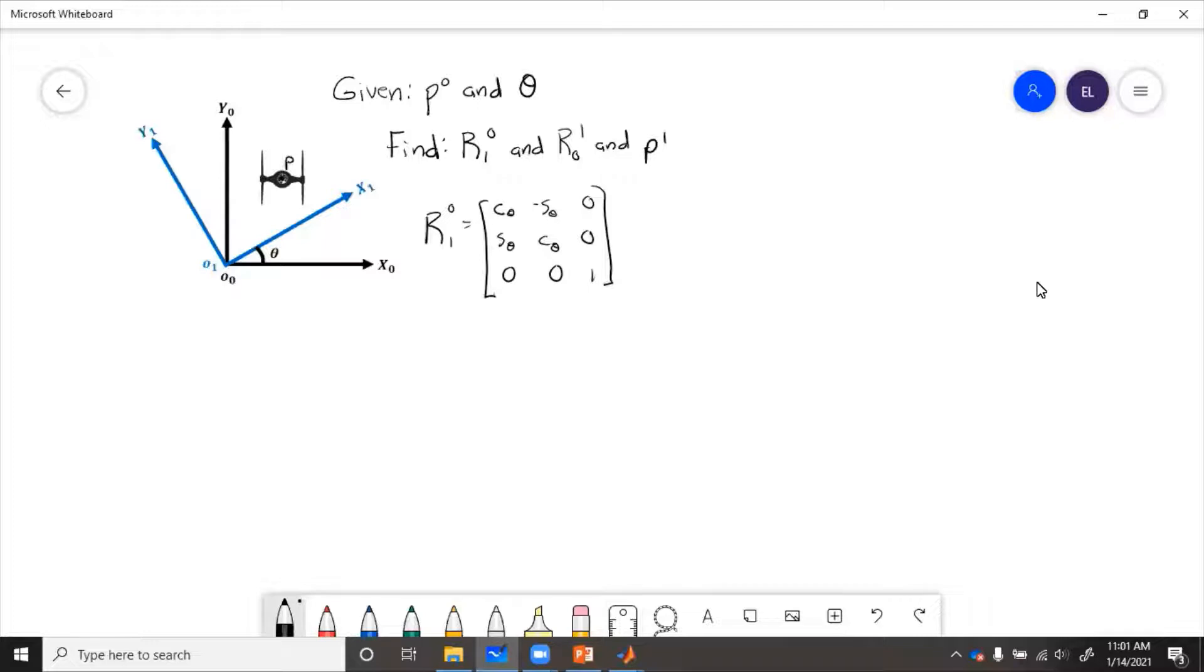So to get from frame zero to frame one. Now let's say we're given that P0 equals one, four, zero, and theta equals 40 degrees.